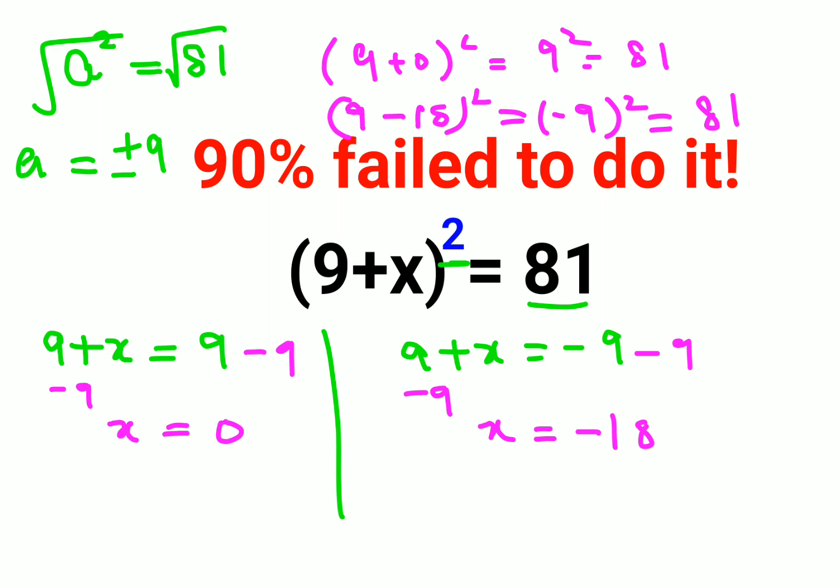So in this case, I can say in both the cases I am getting my RHS back. So here we can say the answer for this one is either 0 or minus 18.